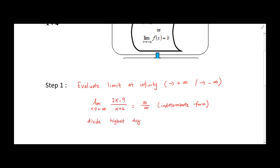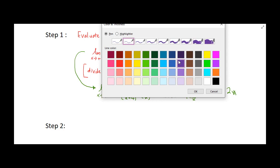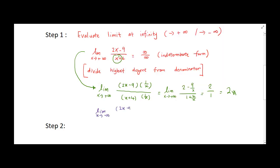So from here, the highest degree is a positive one, linear. So we multiply with one over x. After we simplify and direct substitution, we get a constant number positive two. So when approaches to negative infinity, we also get the same solution as a positive two.